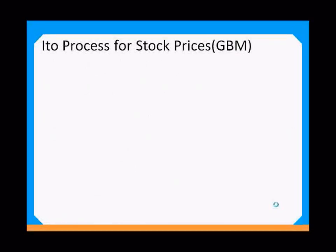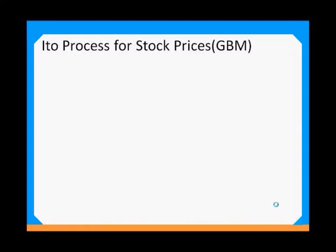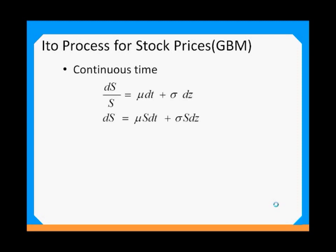To go ahead and do the Monte Carlo simulation, we need some background about the Ito process for stock prices. The Ito process is also known as the geometric Brownian motion. In continuous time, the process is given by: dS/S = μ dt + σ dz, or equivalently dS = μS dt + σS dz, where dz = ε × √(Δt).